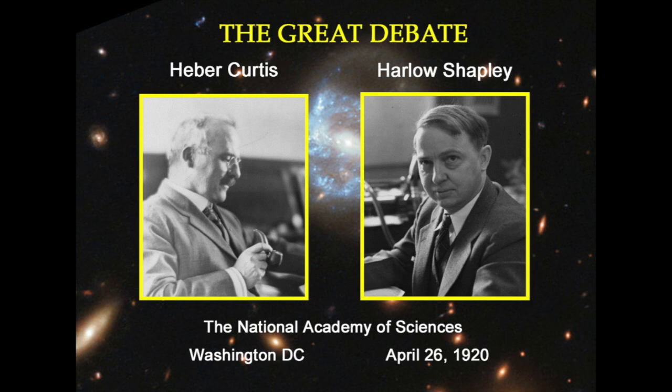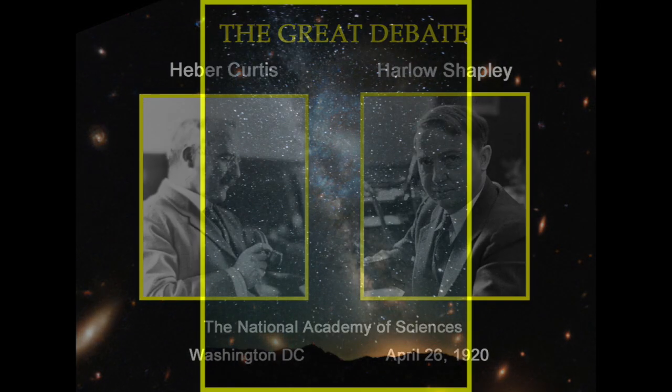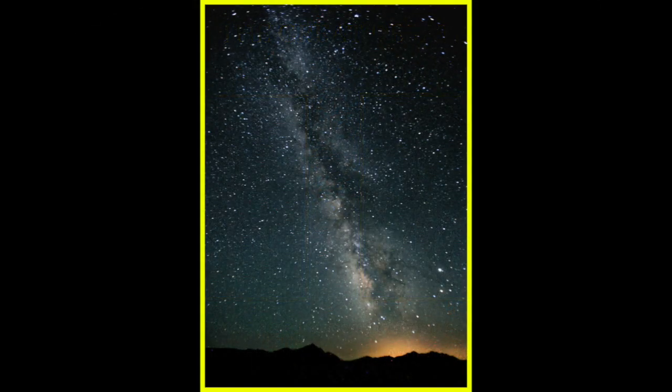Back then, astronomers had only recently come to understand that we live in a galaxy — a vast conglomeration of hundreds of millions, well actually billions as it turned out, of stars, shaped like an enormous flat disk with a kind of bulge in the middle.